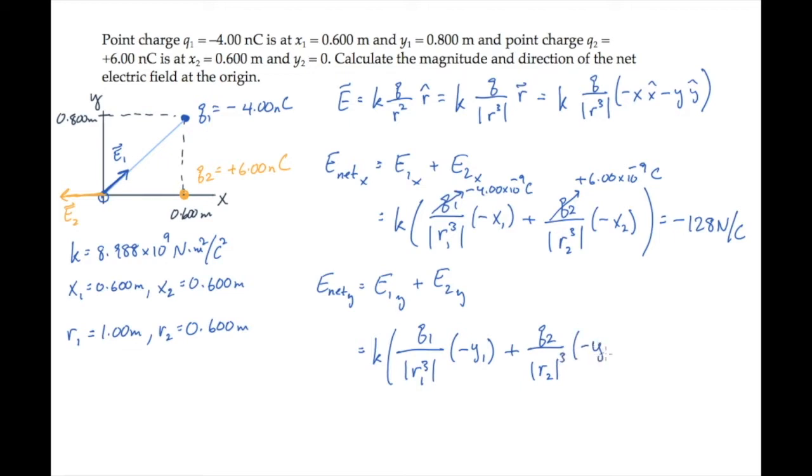With y2 equals 0, we just need the one additional value, y1 equals 0.8 meters. Substitute all the values and calculate to find the y component of the net electric field is 28.8 newtons per Coulomb.